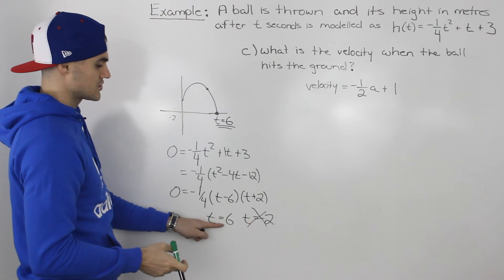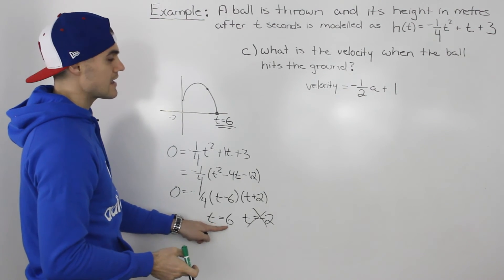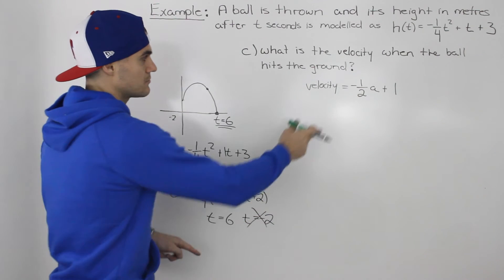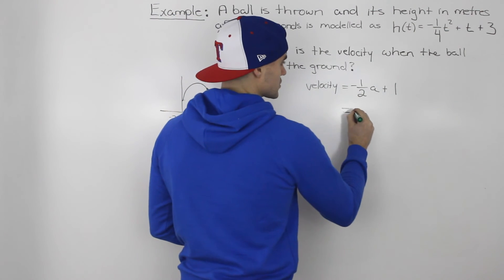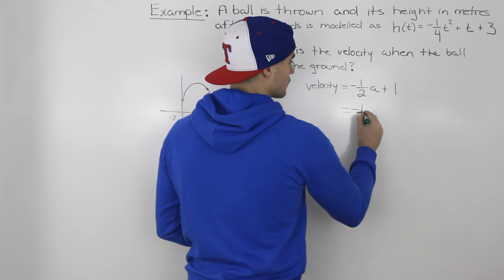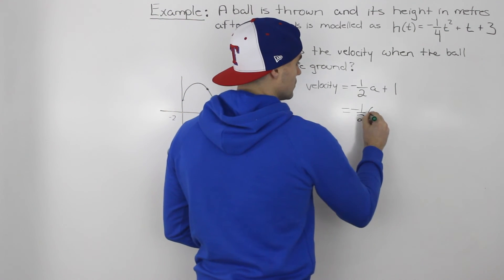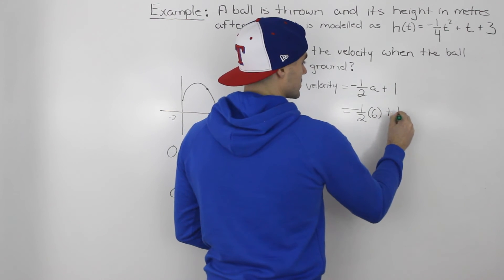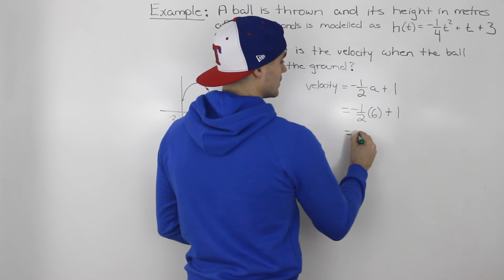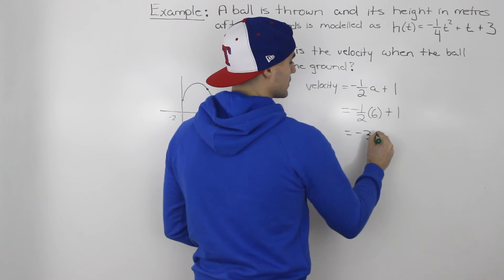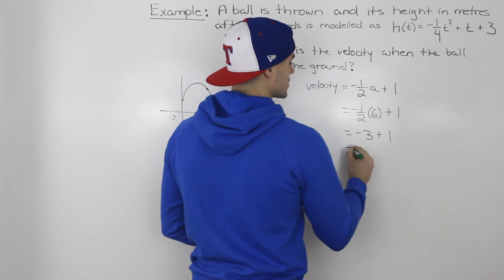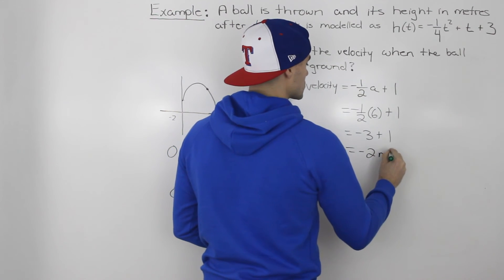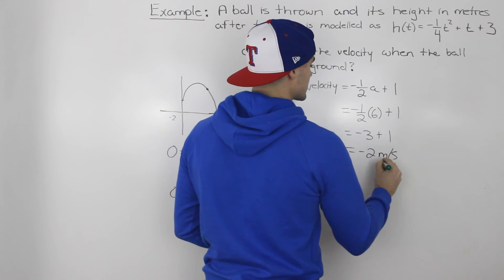Now we take that t value of six and plug it into the velocity equation: negative one over two times six plus one. That gives us negative three plus one, which equals negative two meters per second.